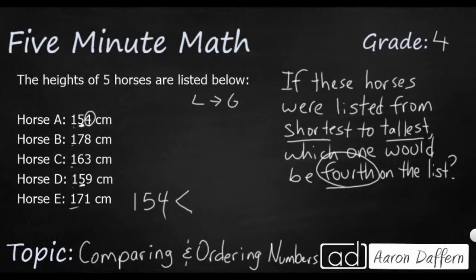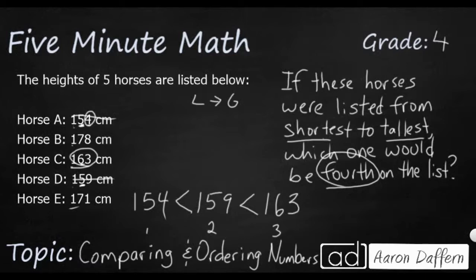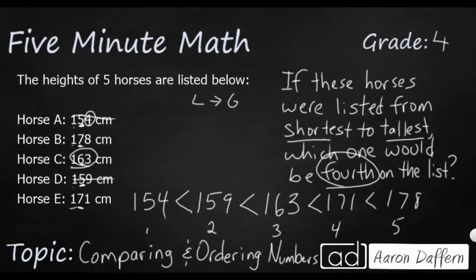154 is less than 159, so that's the second one. Then comes 163 — that has a six in the tens place — so 159 is less than 163. You can put them all in order like this, just like we did in the previous example. Then we have two left: 171 and 178. Listing horse E next gives us 171, which is the fourth one — that's what we're looking for. And the final one is 178.